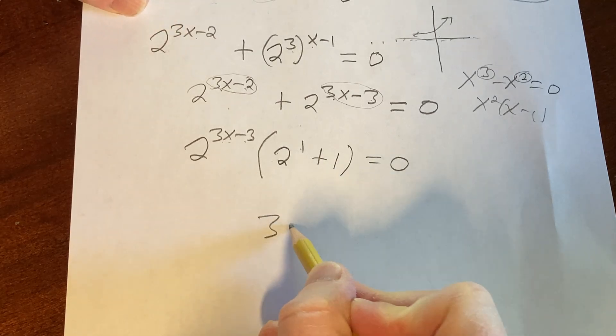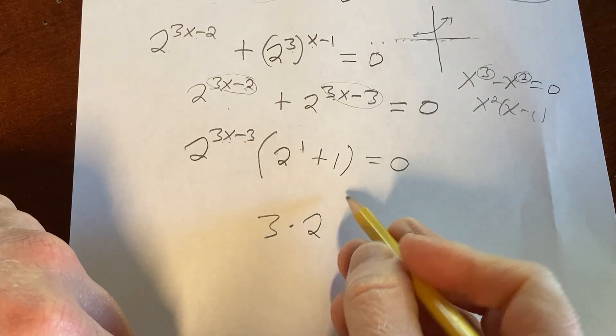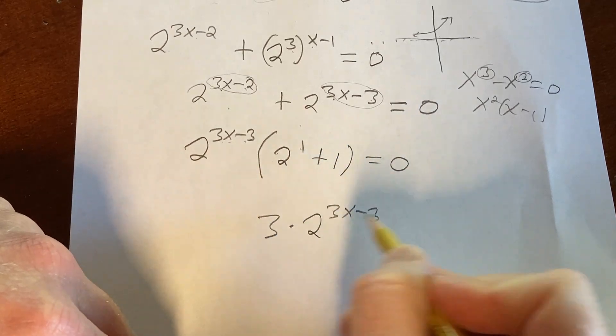This is equal to 0. So here we have 3 times 2 to the 3x minus 3, right? 2 plus 1 is 3, equal to 0.